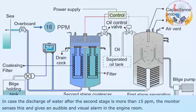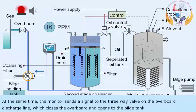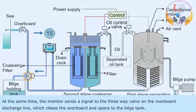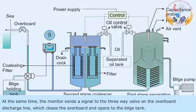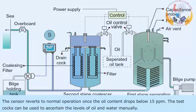Oil content of the final discharge is below 15 ppm. In case the discharge of water after the second stage is more than 15 ppm, the monitor senses this and gives an audible and visual alarm in the engine room. At the same time, the monitor sends a signal to the three-way valve on the overboard discharge line, which closes the overboard and opens to the bilge tank. The sensor reverts to normal operation once the oil content drops below 15 ppm.